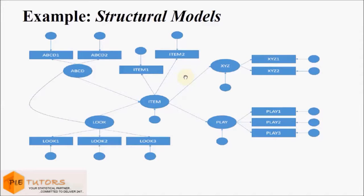The small circles attached with the indicator variables represent the error term associated with that variable. This error term is associated with these variables because we assume that these variables are not measured perfectly.